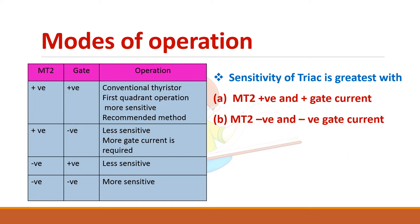There are four modes of operation in TRIAC: MT2 positive with gate positive or negative, and MT2 negative with gate positive or negative. But only two modes are preferred — MT2 positive and gate positive, or MT2 negative and gate negative, where positive and negative are with respect to MT1. The sensitivity of the TRIAC is greatest only in these two recommended modes of operation.